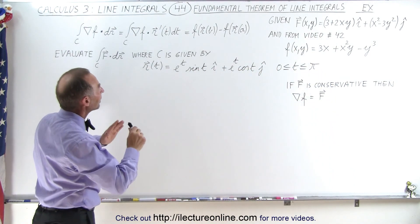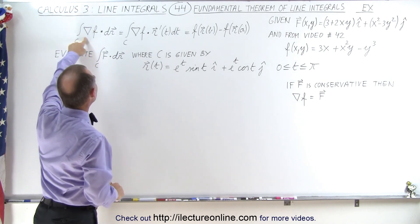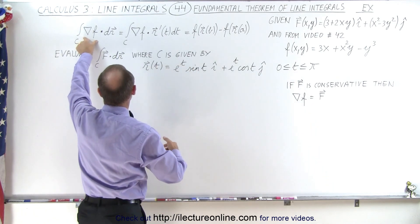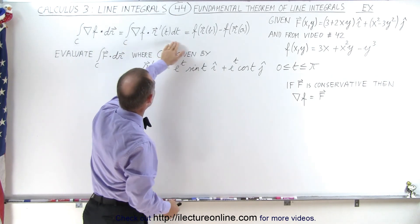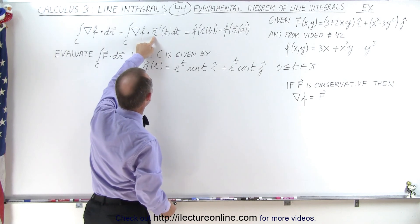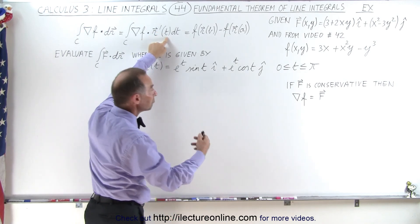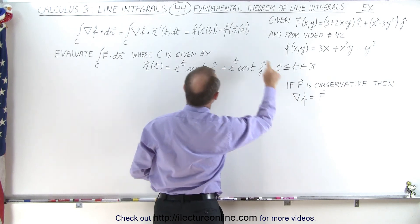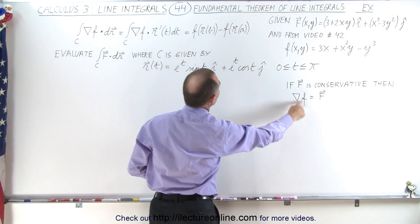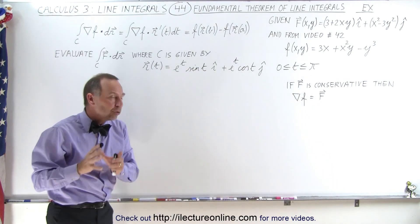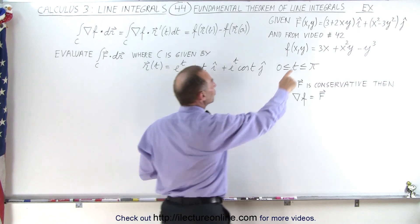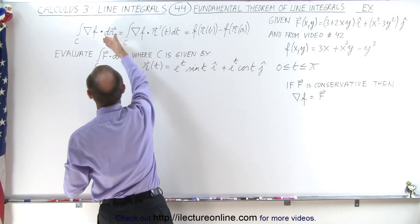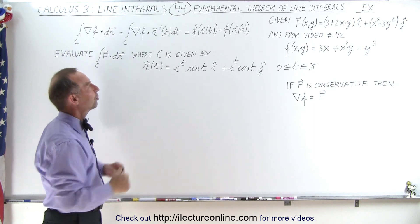The fundamental theorem of line integrals tells us that the gradient of f — which equals the vector field F — dot dr equals the function f evaluated at the endpoint minus f evaluated at the initial point. We can write dr as r-prime, the derivative of r with respect to the parametric variable t. So instead of actually computing the line integral directly, we can find this potential function f and simply evaluate it at the endpoint and initial point.